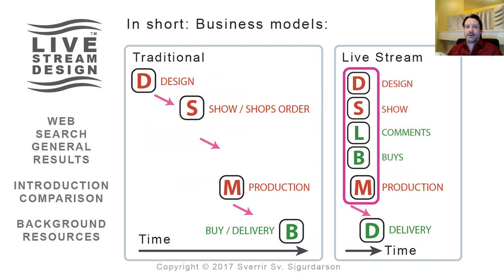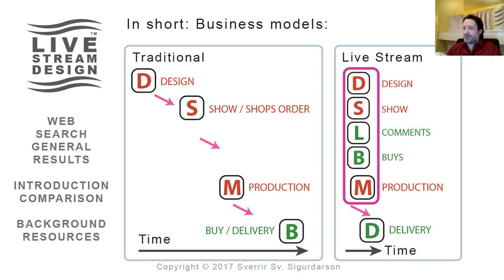In summary, the traditional business model is cascading and can take many weeks or many months — sometimes more than half a year — from design to product in shops. Live stream design turns this on its head. The design process is the show. People watching can comment, make requests, and buy directly, immediately afterwards. Production can potentially start within minutes, and with the right setup, delivery can follow very quickly.